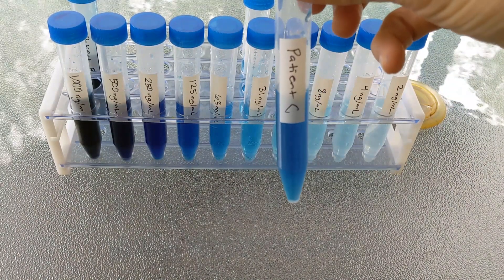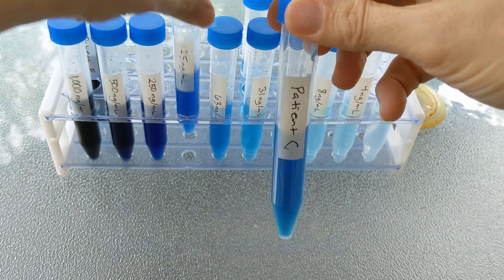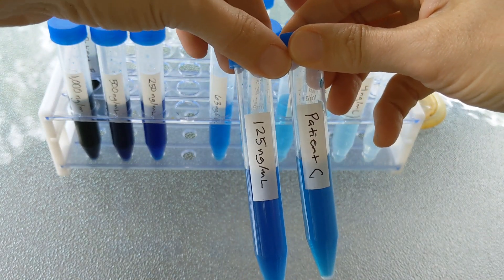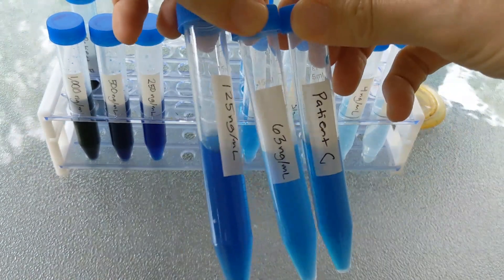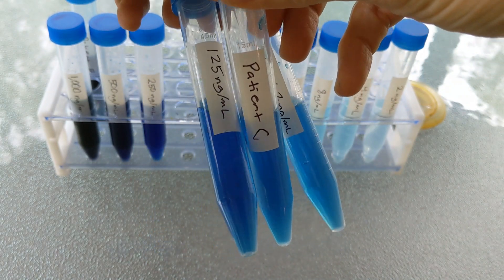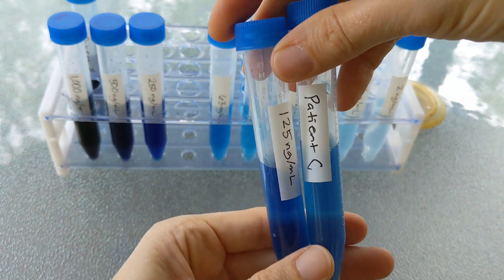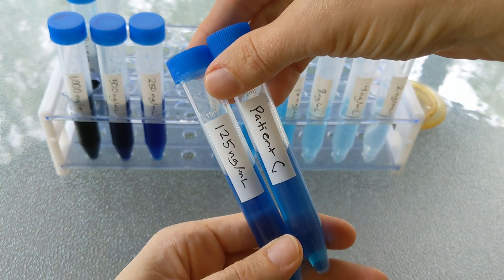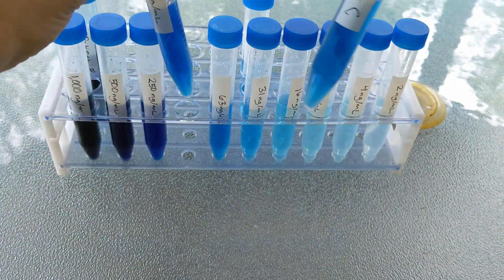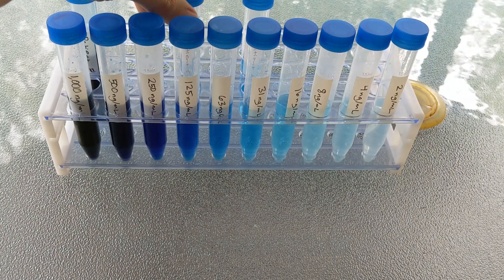Patient C, paler than the last one, but maybe darker than the first one. Let's see if that's a match. I think that's a match for 125. Those look pretty well matched to me. So patient C has an antigen concentration of 125 nanograms per milliliter.